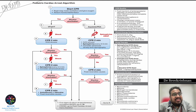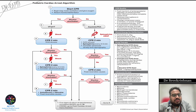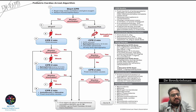For non-shockable rhythms — asystole or PEA — do not defibrillate. As soon as CPR starts, give epinephrine 0.01 mg per kg as early as possible. Unlike the shockable pathway where epinephrine is given after two shocks, in PEA or asystole give epinephrine immediately. Repeat every 3 to 5 minutes. Continue advanced airway consideration and compressions at 15 to 2. After two minutes, reassess — if rhythm becomes shockable, switch to the shockable algorithm and defibrillate.